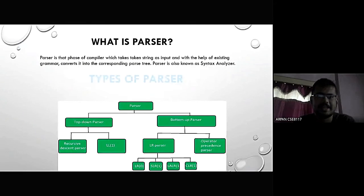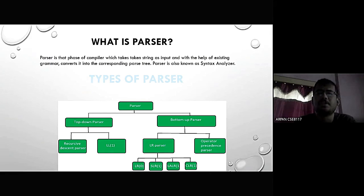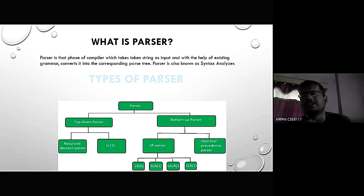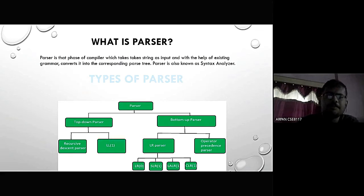A parser is that phase of the compiler which takes a token string as input and, with the help of existing grammar, converts it to the corresponding parse tree. A parse tree can also be known as a syntax tree. We now learn about the types of parsers.